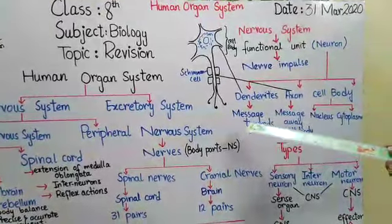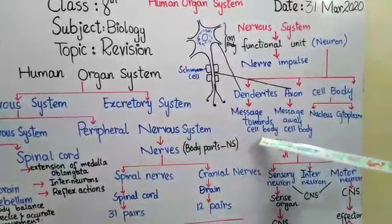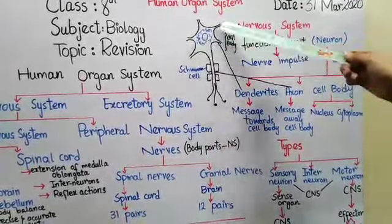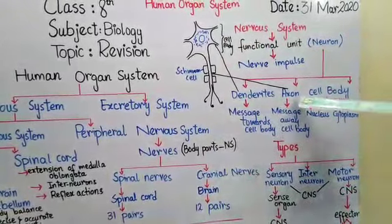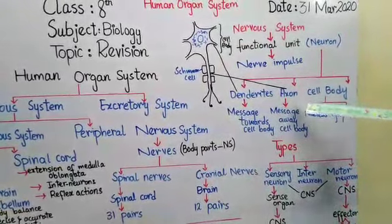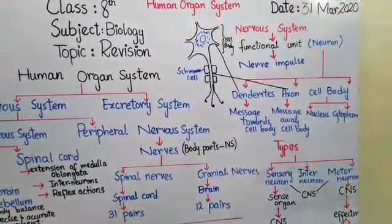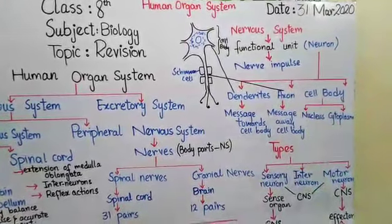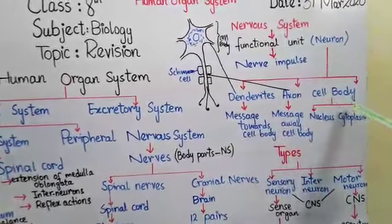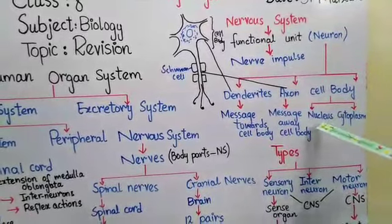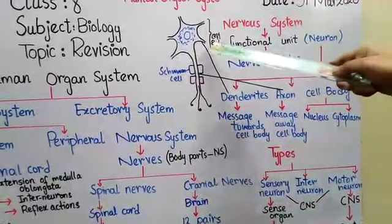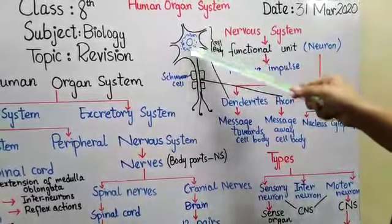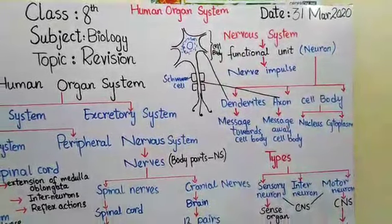Dendrites are the small extensions that take messages toward the cell body. The axon is the long extension that takes messages away from the cell body. The third part is the cell body itself, which consists of nucleus and cytoplasm — as you can see, the cell body consists of a central nucleus and the fluid material known as cytoplasm.